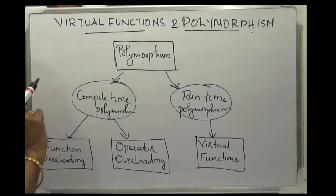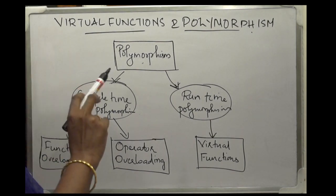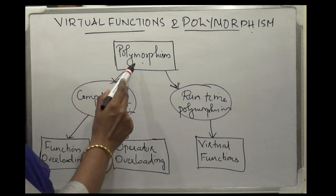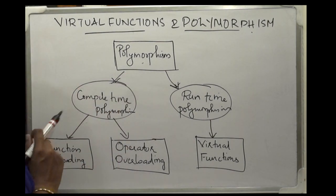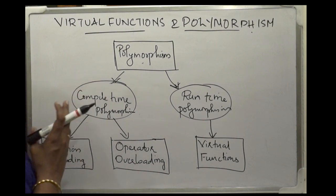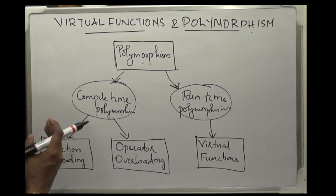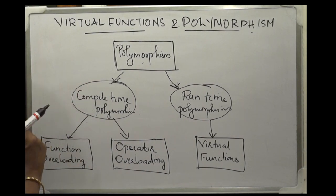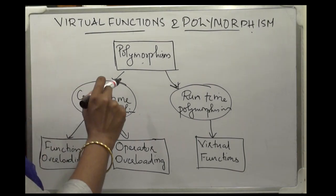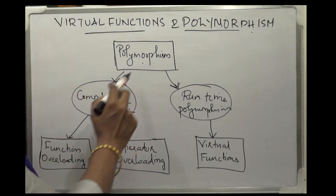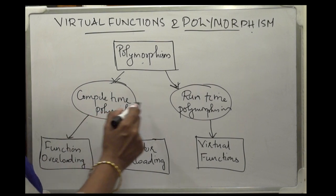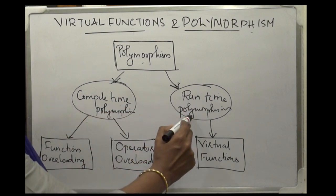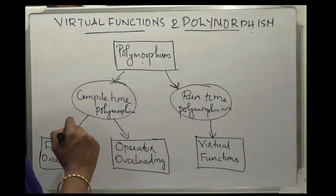What is polymorphism? Polymorphism is the ability to exhibit more than one form. We have seen examples of function overloading and operator overloading. Polymorphism is generally classified into two types: compile time polymorphism and runtime polymorphism.